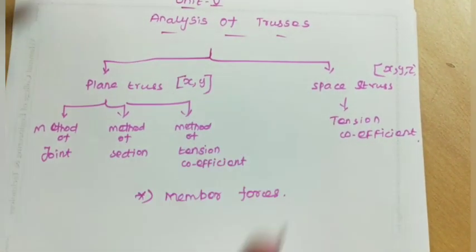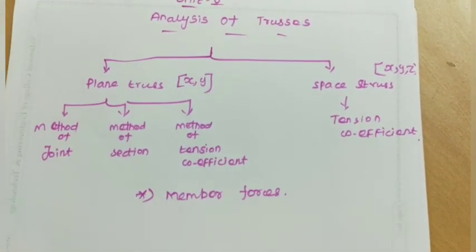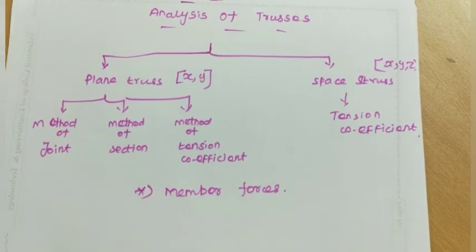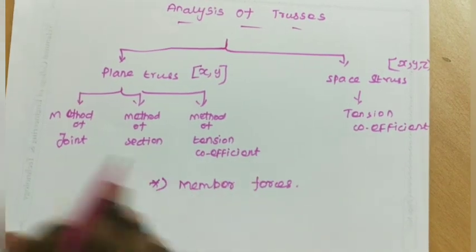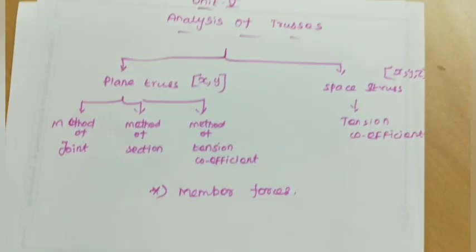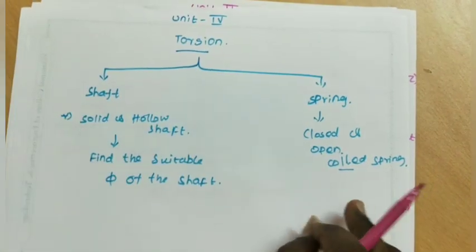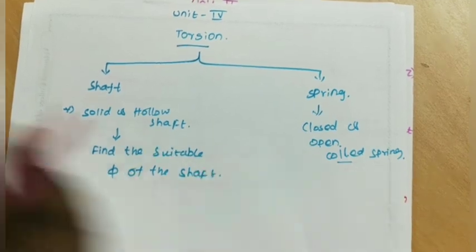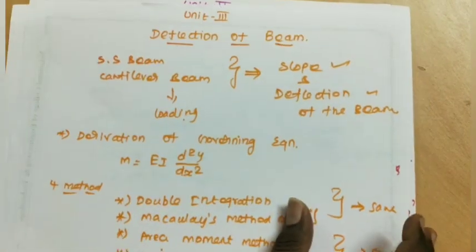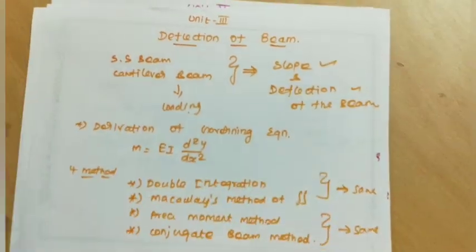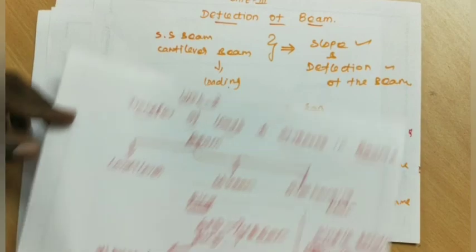To summarize: Unit 5 is Analysis of Trusses, Unit 4 is Torsion, Unit 3 is Deflection of Beams, Unit 2 is Transfer of Loads and Stresses in Beams, and Unit 1 is Stress, Strain and Deformation of Solids.